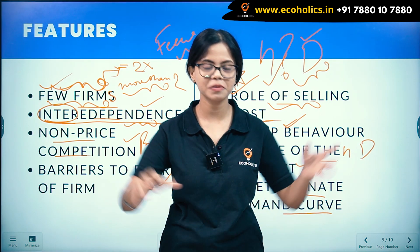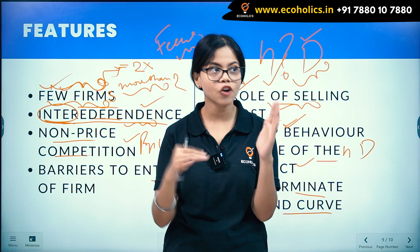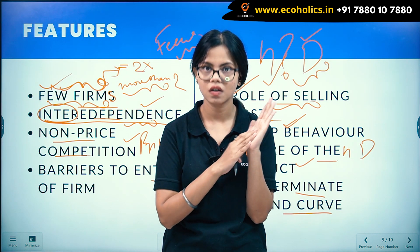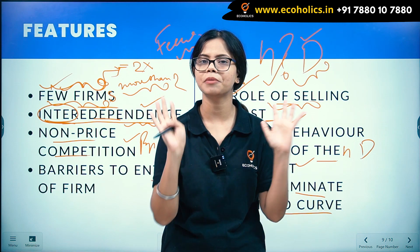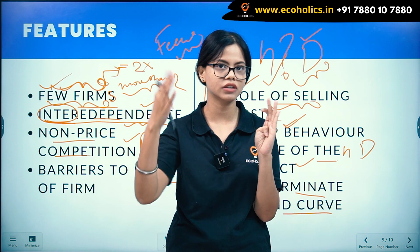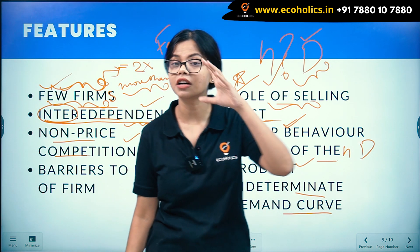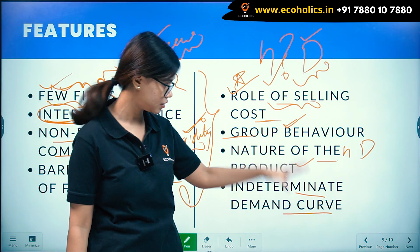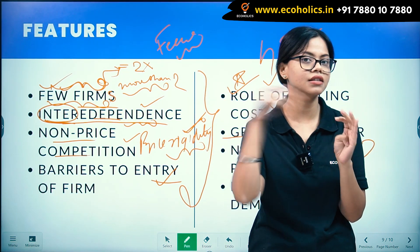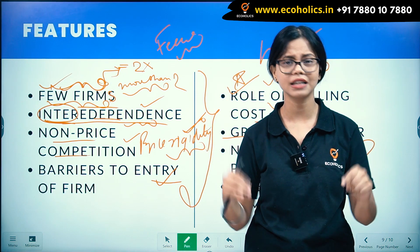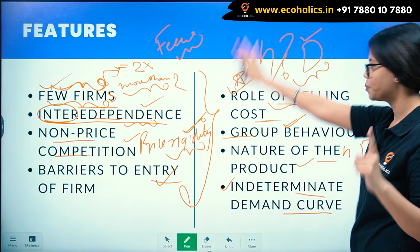The demand curve is indeterminate. These firms are interdependent, so if one firm increases its price, the rest cannot ignore it — they will react. For example, if one firm changes its price, other firms will surely take some reaction, leading to fluctuations in price. That is the main reason the demand curve in oligopoly is indeterminate — due to interdependence, price and output keep changing.